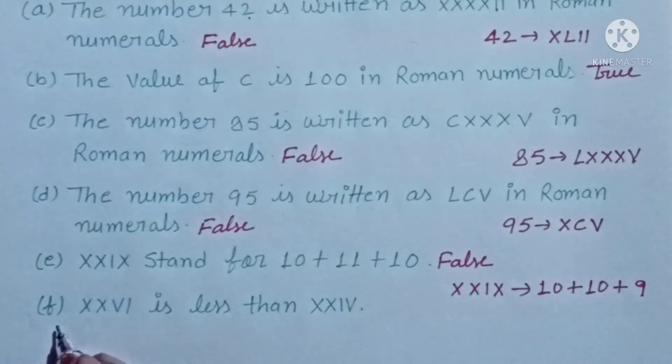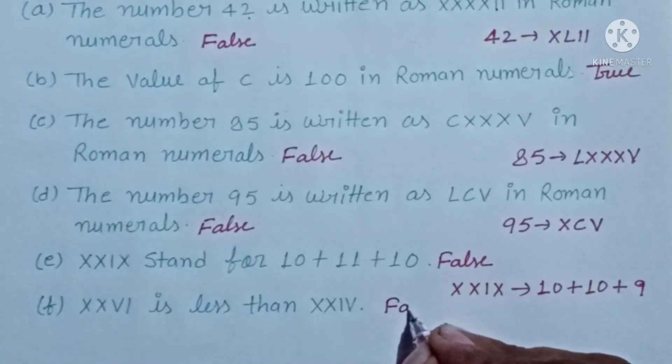Come to the next. XXVI is less than XXIV. Here we are saying that this is 26, X is 10, 10 is 20, equals 26, less than 24. So this is false. 26 is more than 24.